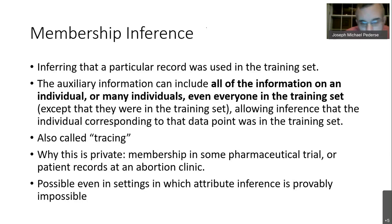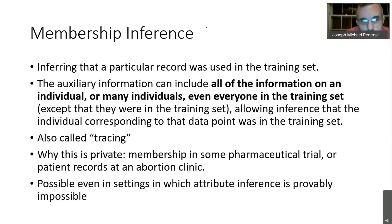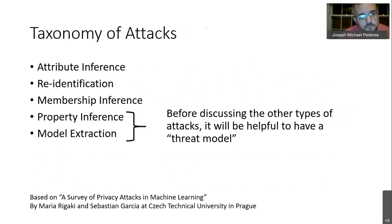Membership inference is in some ways easier than attribute inference: there are machine learning settings in which attribute inference is provably impossible, and yet membership inference is still possible. One way adversaries perform a membership inference attack is to train many similar models on data from approximately the same distribution, feed data through knowing which points were in each training set, and build a meta-model — like a discriminator — that predicts whether a data point was in the training data or not.